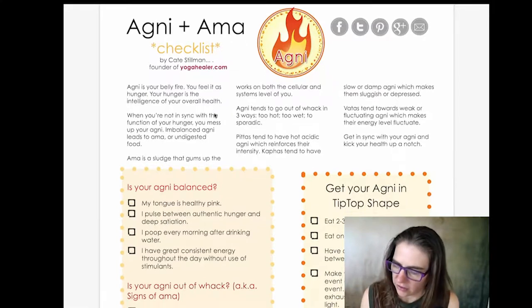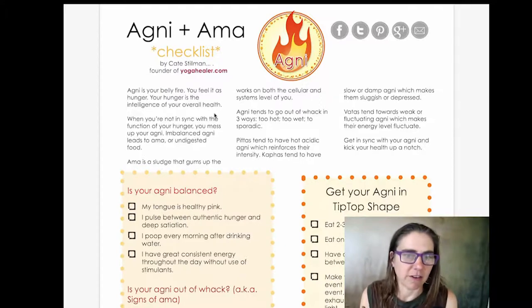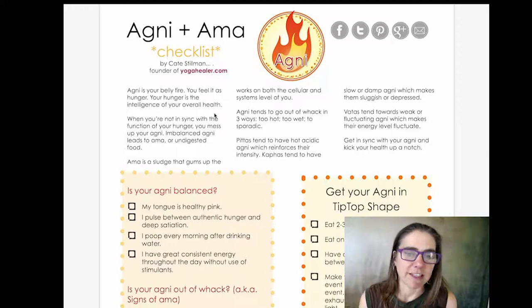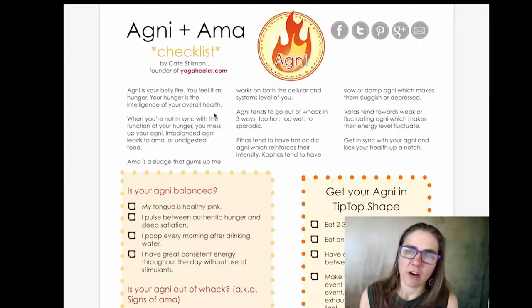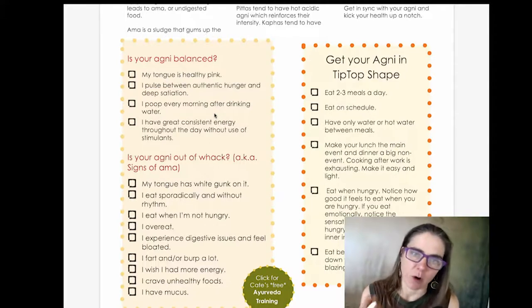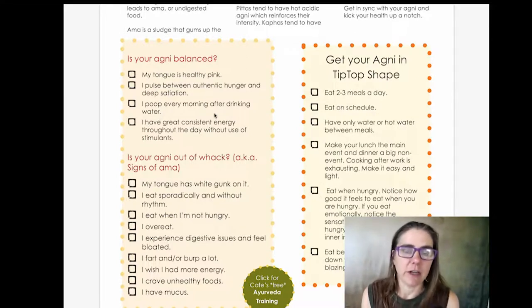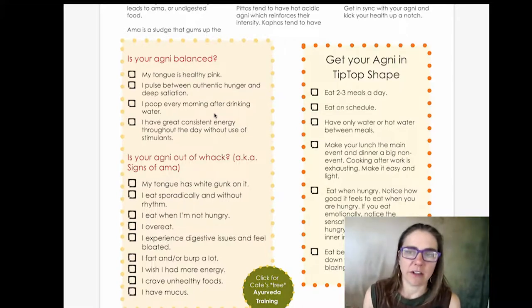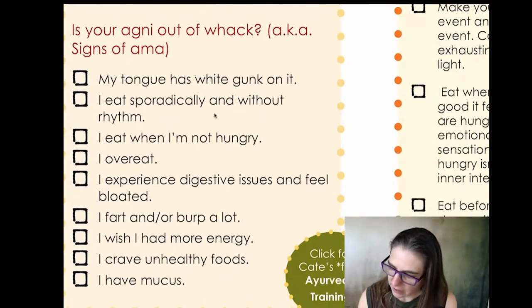So this is Agni and Amma. And Agni means this power of digestion. It's fire. It's a little different than the word pitta. It's more of just this raw power of fire and digestion within your cells. It's the feeling of hunger. It's the feeling of very deep absorption in your body. And Amma is the opposite. Amma is the sludge that gums up the works, both on the cellular level and also the systems level. So what we want to identify right now is, are your allergies more Vata, Pitta, or Kapha? And is there Amma?